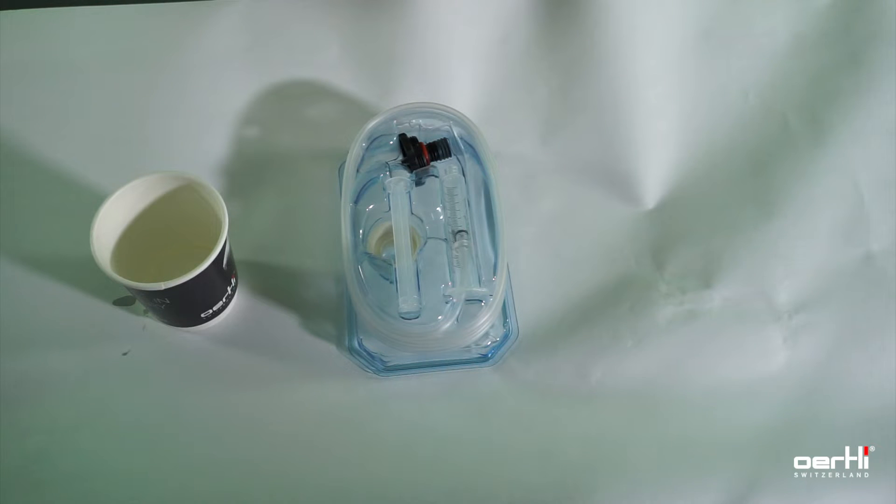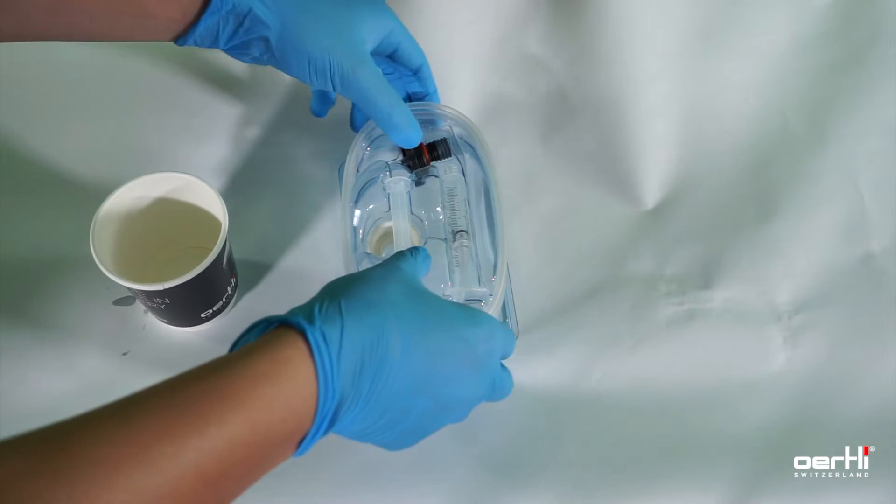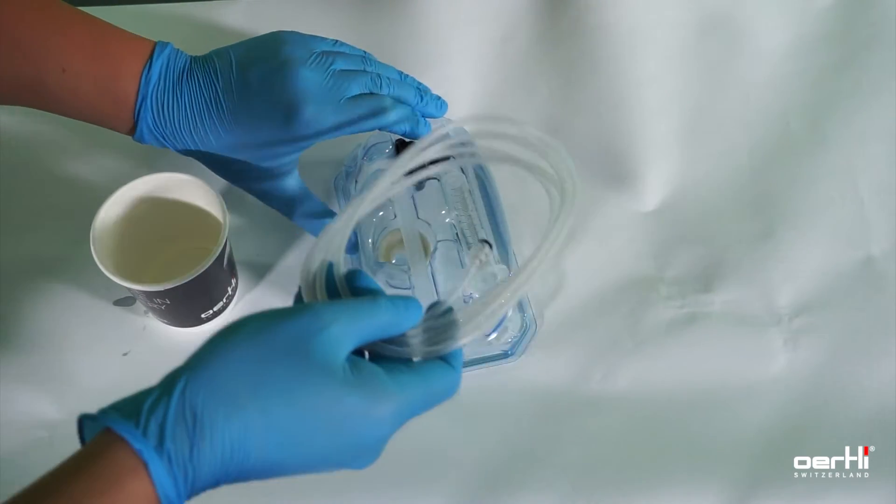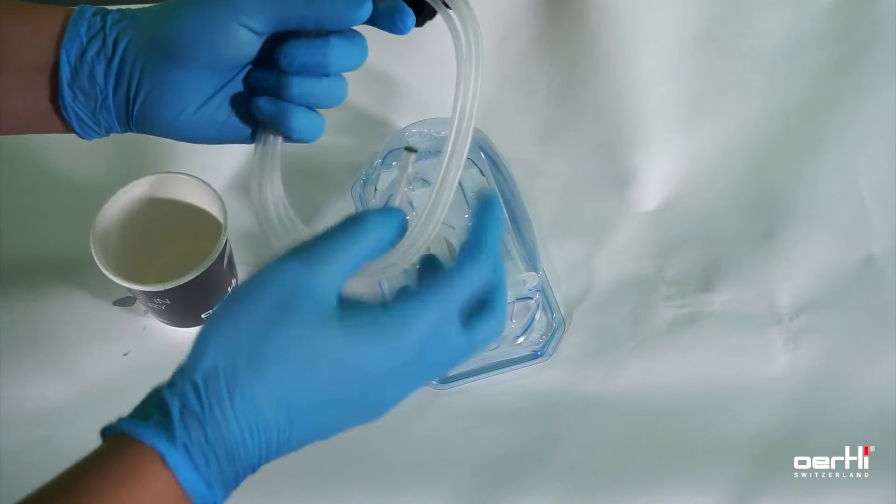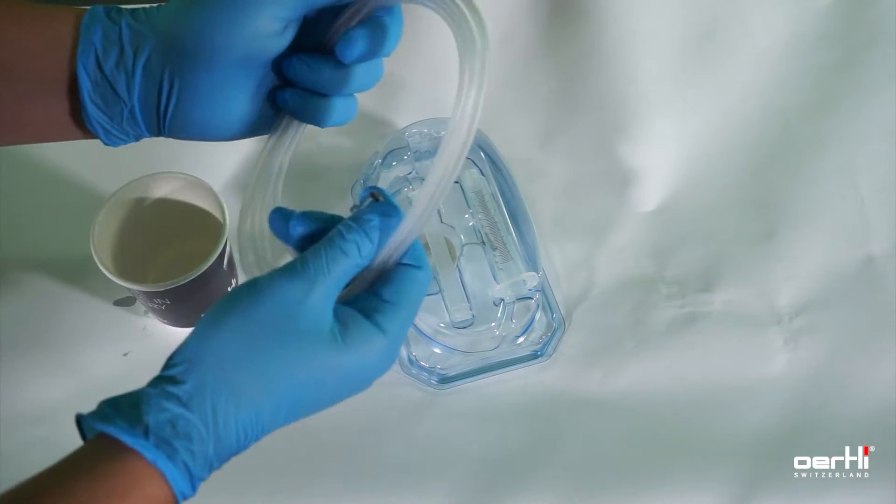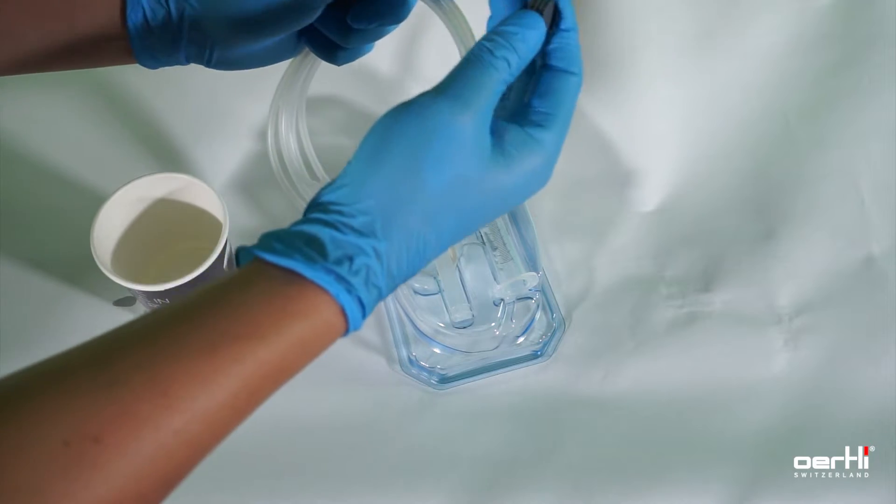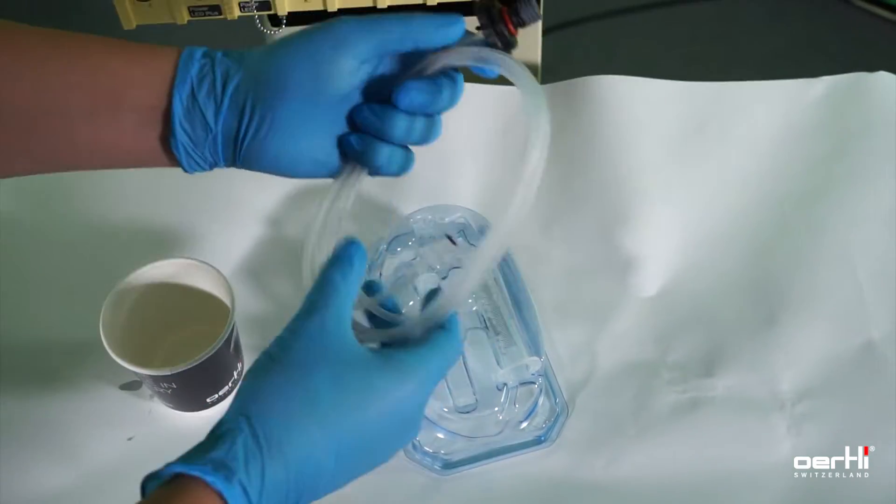The silicon oil application set comes in the shown condition. It includes a tubing with the black syringe adapter which already contains the plunger stopper.